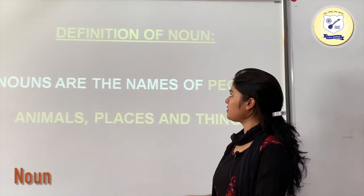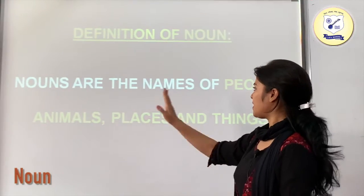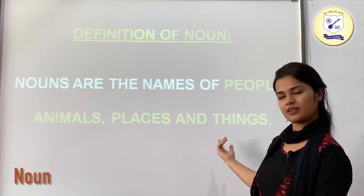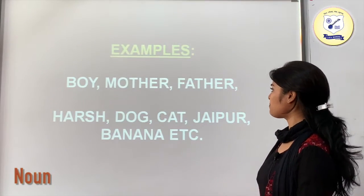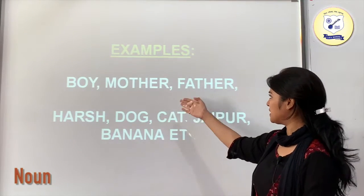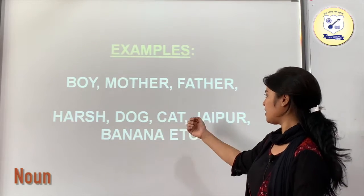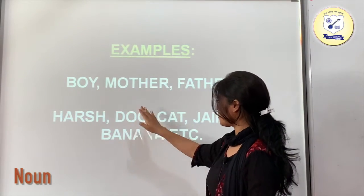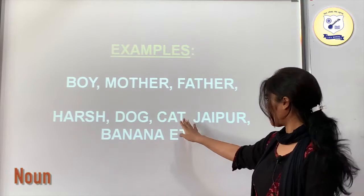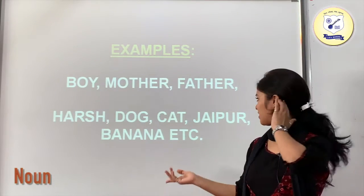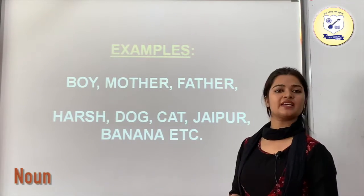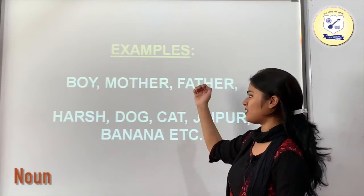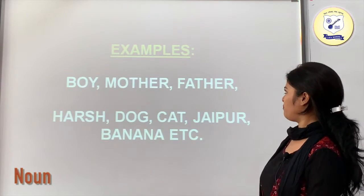So let's get started. The definition of nouns is: nouns are the names of people, animals, places and things. Examples are boy, mother, father, dog, cat, Jaipur, banana. Dog and cat are examples of animals, Jaipur is an example of a city, banana is an example of a thing, and boy, mother, father are examples of people.